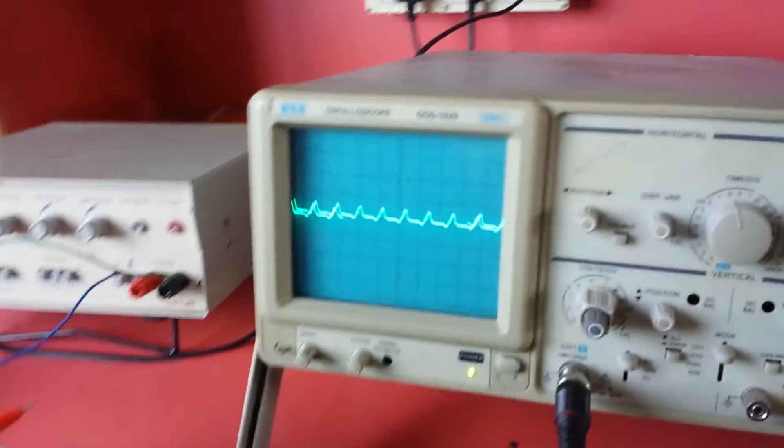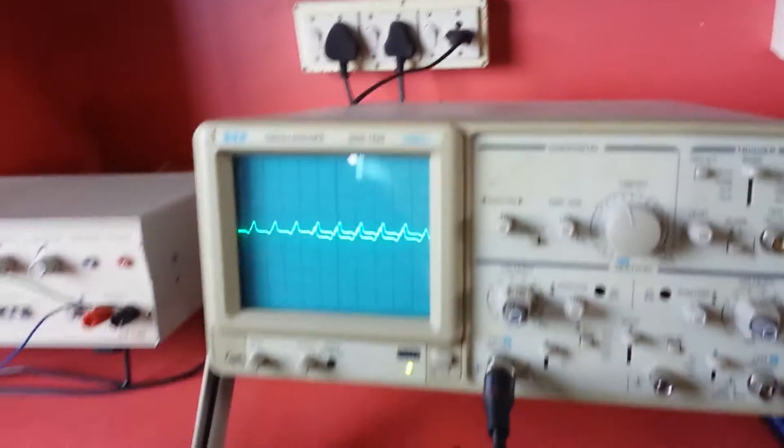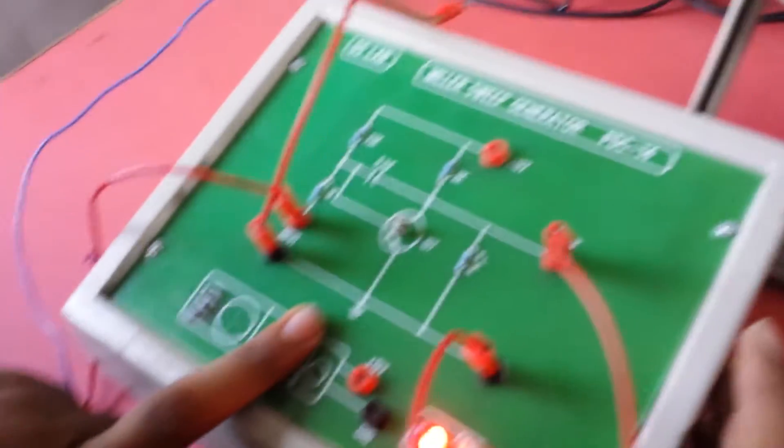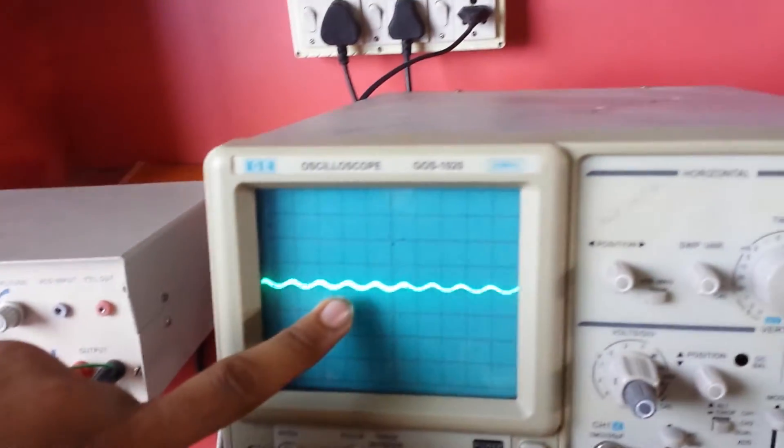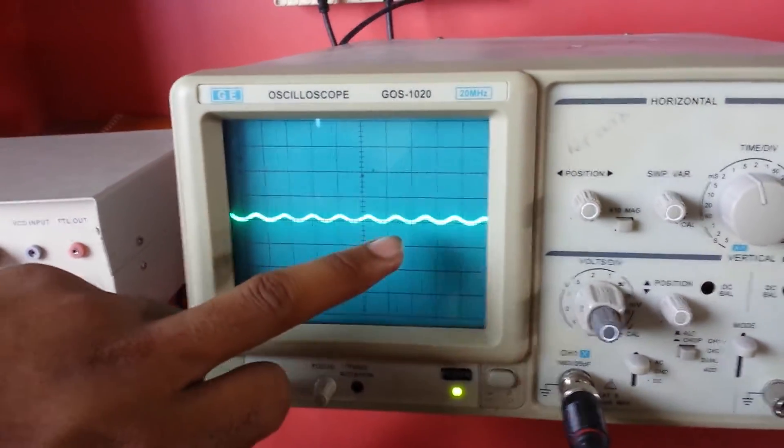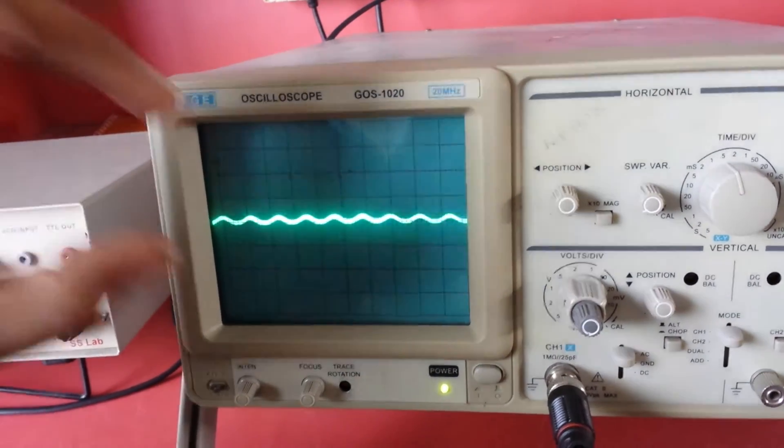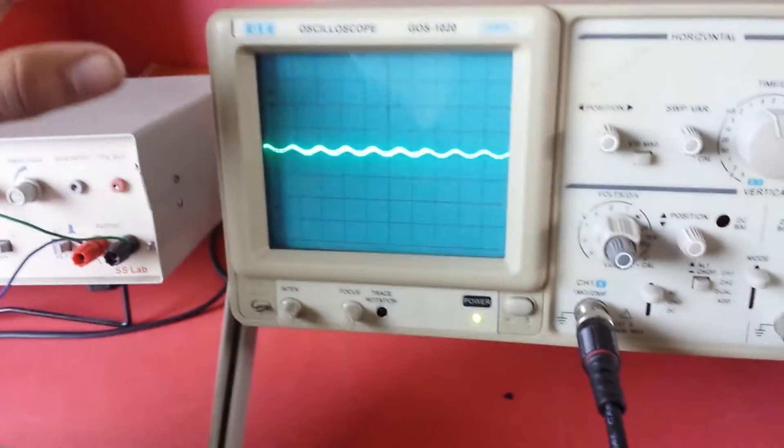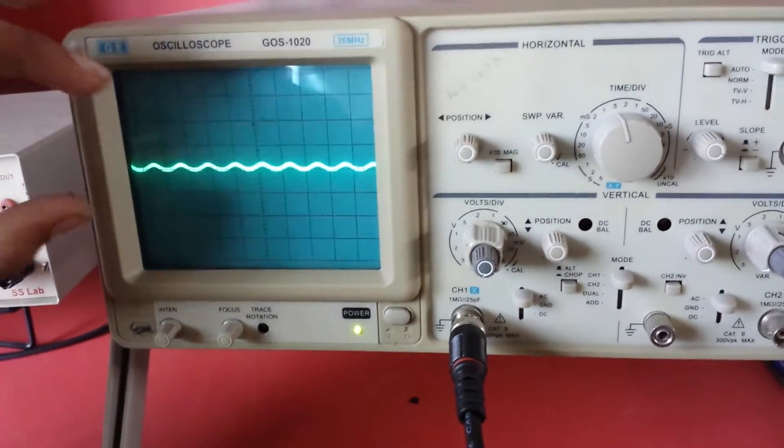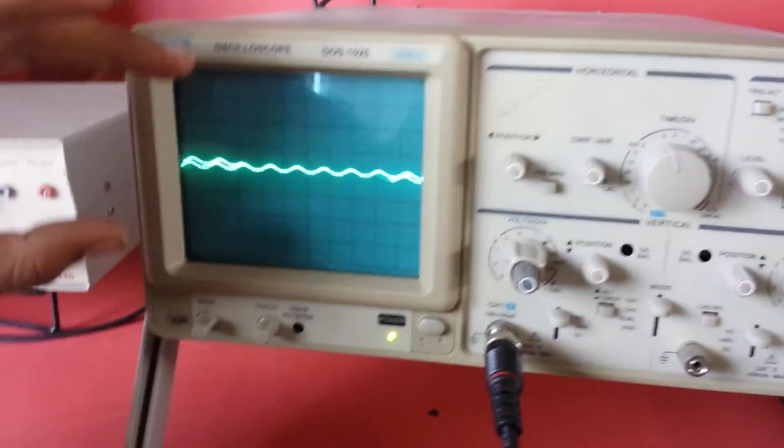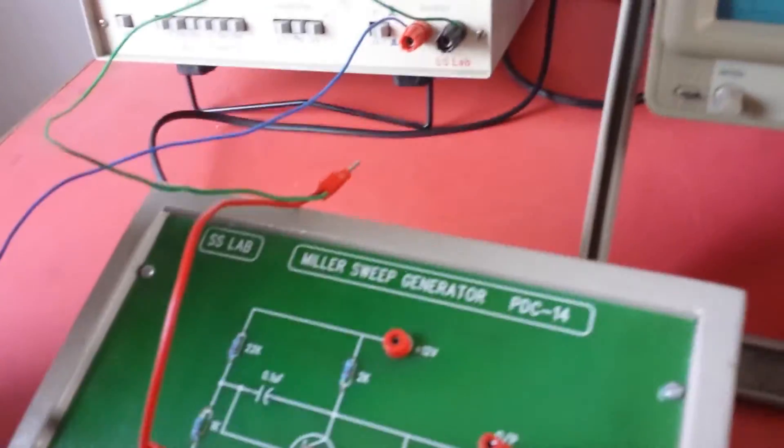Then you have to turn on this machine, Miller's wave generator. You can see here, you can see the waveform is very much reduced, the previous waveform. So you can tell this is Miller's wave generator. That's why it's called Miller's wave generator. It's reduced the waveform and improved it.